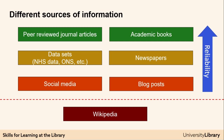Newspapers are another great source of opinion and information, but if you are going to use them, you need to let the reader of your assessment know that the information may be biased. One newspaper may have a very different take on an event to another. The issue of potential bias in datasets and newspapers is why they are lower down in terms of reliability compared to academic literature.